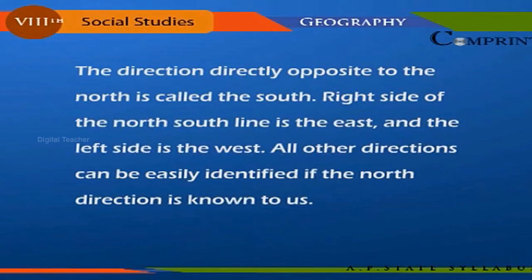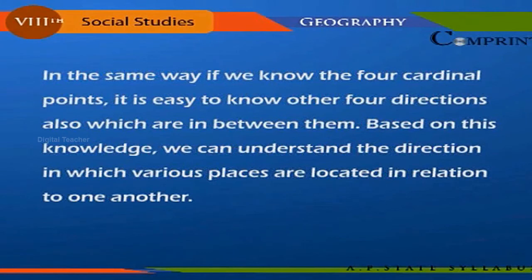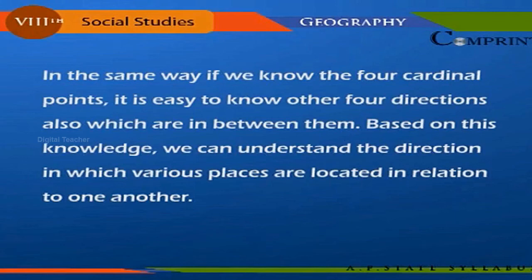The direction directly opposite to the north is called the south. The right side of the north-south line is the east, and the left side is the west. All other directions can be easily identified if the north direction is known. In the same way, if we know the four cardinal points, it is easy to know the other four directions which are in between them, and we can understand the directions in which various places are located in relation to one another.